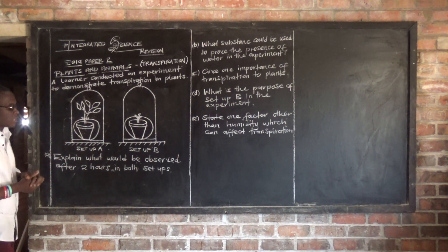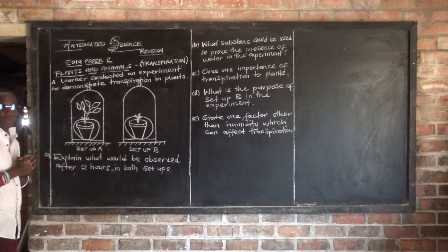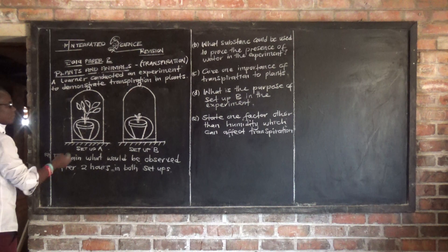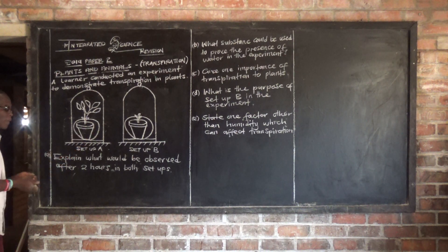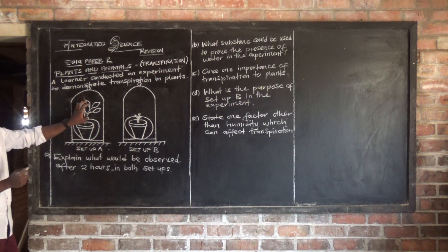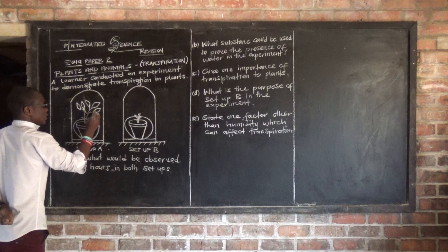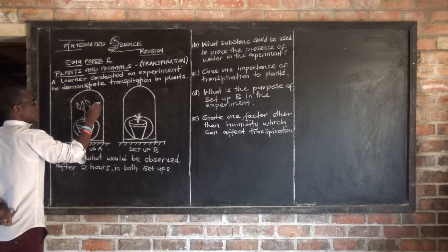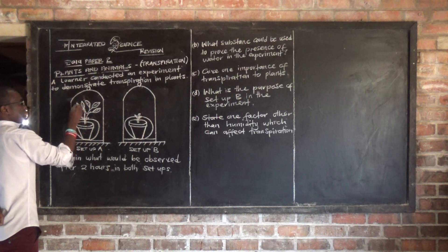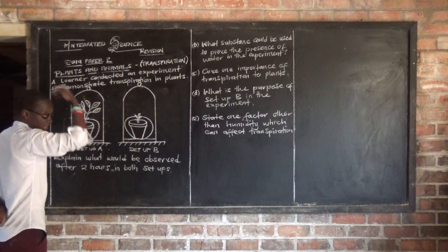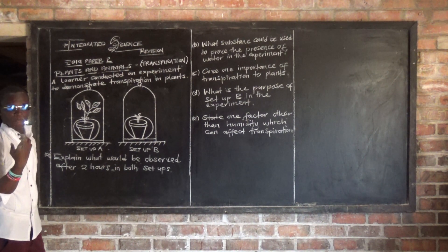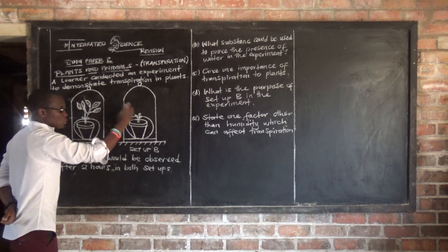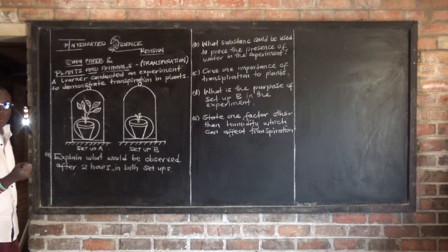So this experiment has two setups - Setup A and Setup B. In Setup A we have a potted plant which consists of leaves. Then this other plant in Setup B has no leaves. So this one has leaves, and this one does not have leaves.